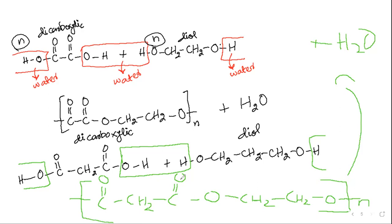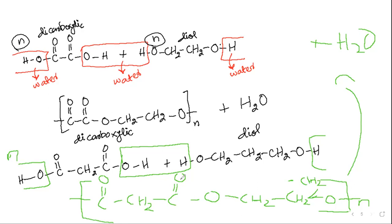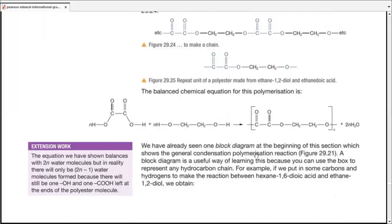Well done — but there is a small mistake with the polymer. There was supposed to be another CH₂ — three CH₂ groups in total, not two. This practice is for polyester only. There are many other condensation polymers; let's see how many are present in the book.